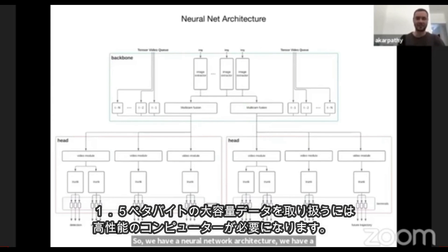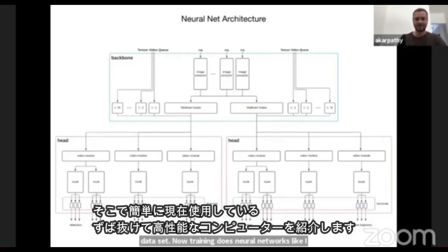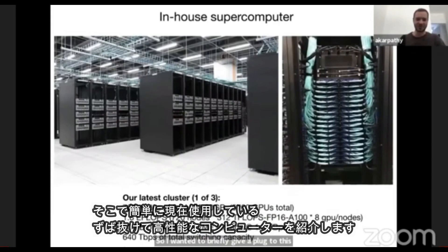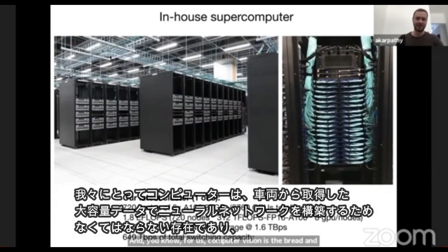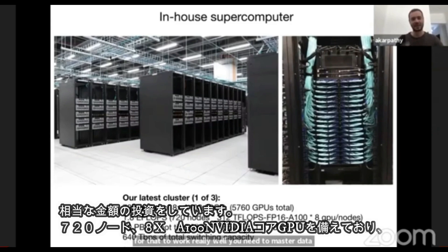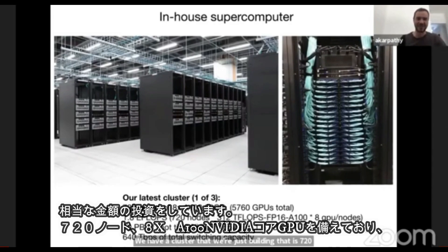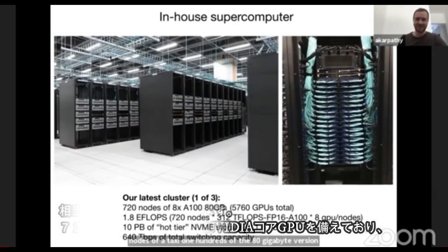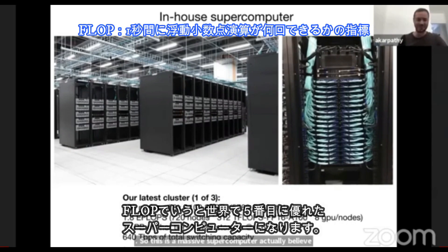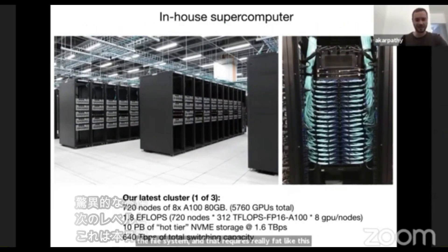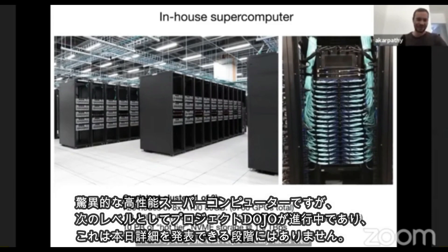Training neural networks on a 1.5 petabyte dataset requires a huge amount of compute. Computer vision is the bread and butter of what we do and what enables Autopilot — for that you need massive datasets from the fleet, but you also need to train massive neural nets and experiment a lot. We've built a cluster of 720 nodes of 8x A100s in the 80 GB version. I believe in terms of FLOPS this is roughly the number-five supercomputer in the world.